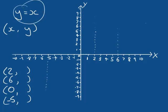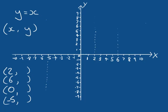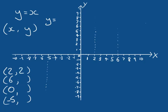With the equation Y equals X: if X is 2, then Y is equal to 2, giving us the point (2, 2). If X equals 6, then Y is equal to 6, giving us the point (6, 6). If X equals 0, then Y equals 0 — so we have a point that goes through the origin.